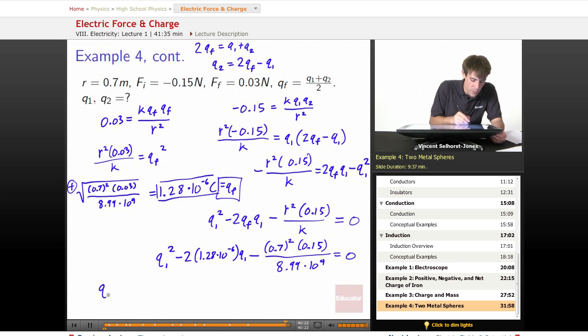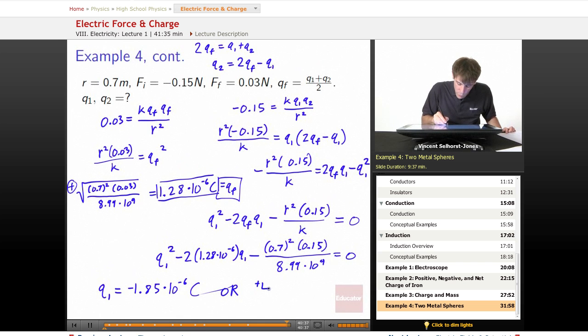If you do either one of those, you'll find out that the two possibilities for Q1 is Q1 is equal to either negative 1.85 times 10 to the negative sixth Coulombs, or positive 4.41 times 10 to the negative sixth Coulombs. So we've got two different possibilities here.